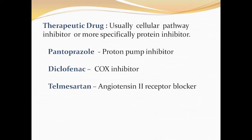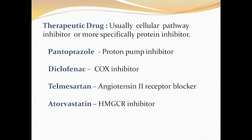Next is Telmisartan, a very popular antihypertensive drug used to treat high blood pressure. It is a type of angiotensin-2 receptor blocker. The next in sequence is Atorvastatin, which is an HMGCR enzyme inhibitor. This enzyme is the first enzyme in the cholesterol biosynthetic pathway, so when Atorvastatin inhibits this enzyme, cholesterol synthesis is stopped.